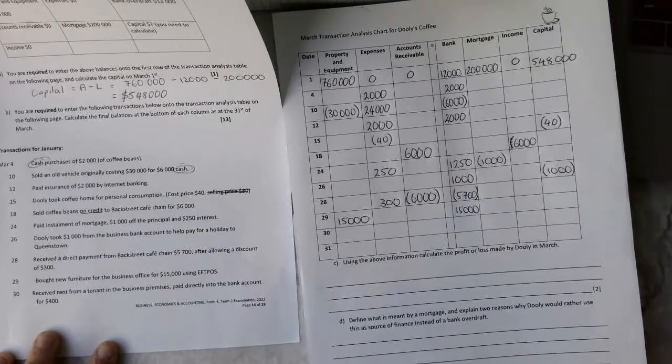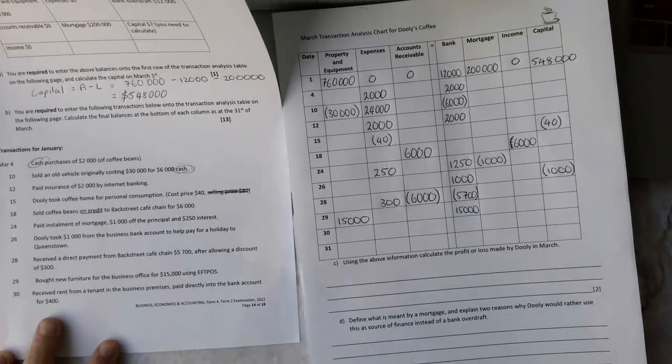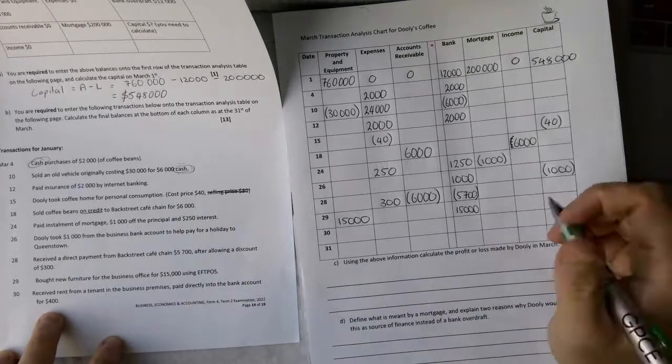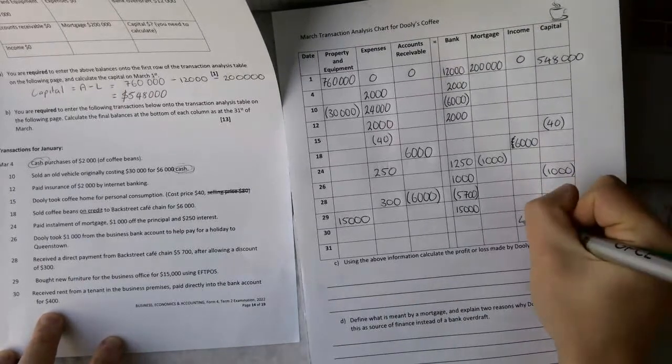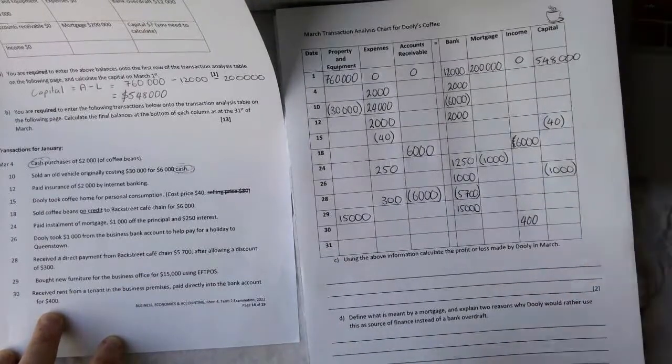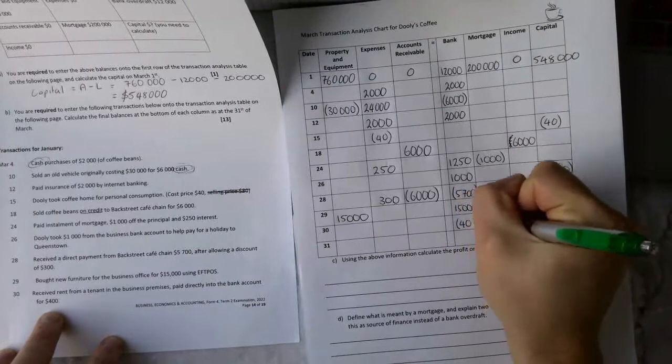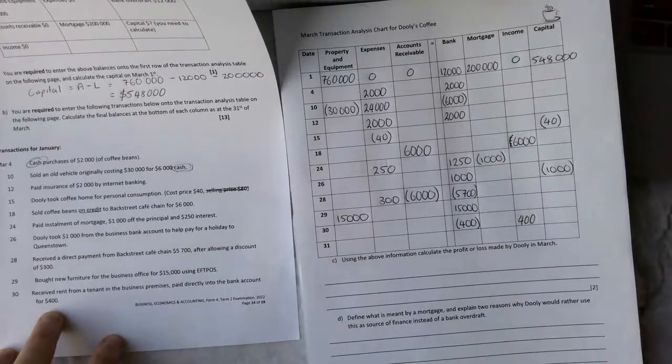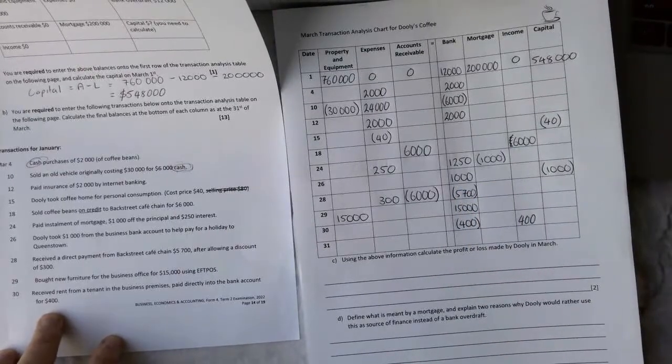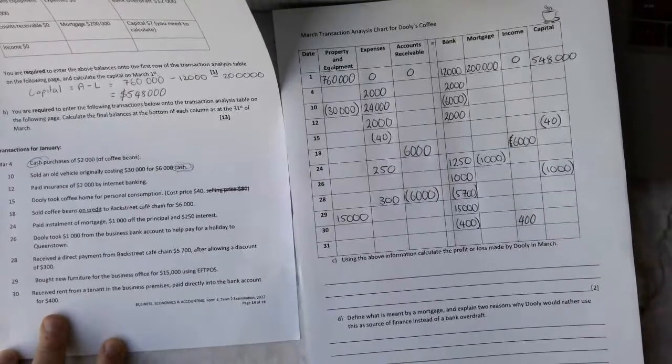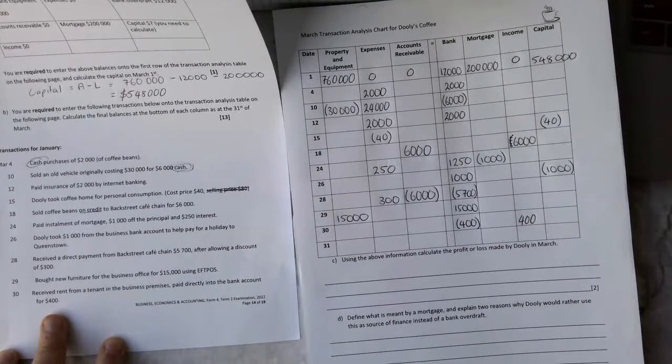And we received rent from a tenant in a business premise paid directly into our business account. Rent received is an income of $400. And we received it directly into our bank account. So the bank account is going to go up and we're going to owe the bank less money. So there's all our transactions as the exam asked for.